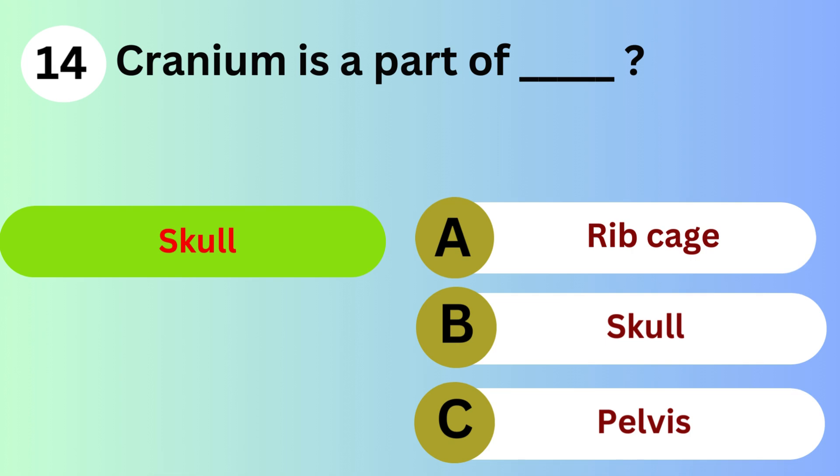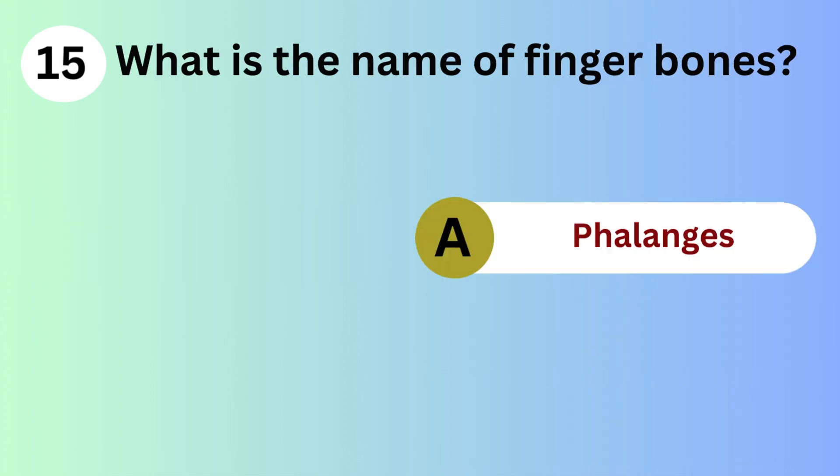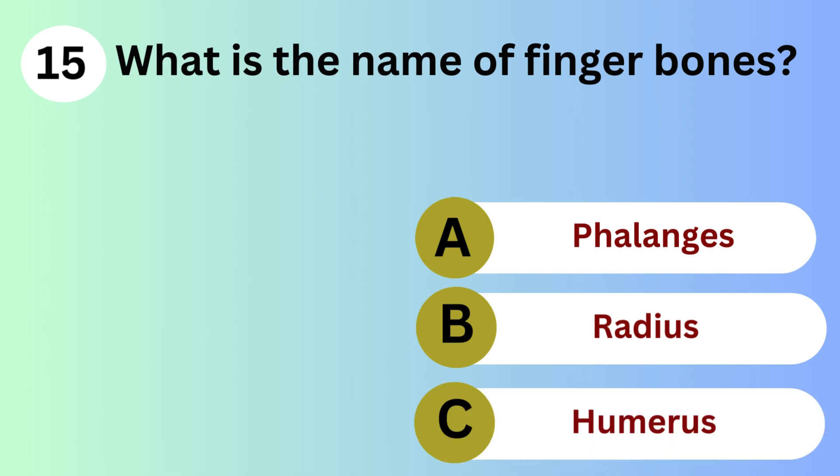Answer is B. Skull. What is the name of finger bones? A. Phalanges. B. Radius. C. Humerus.